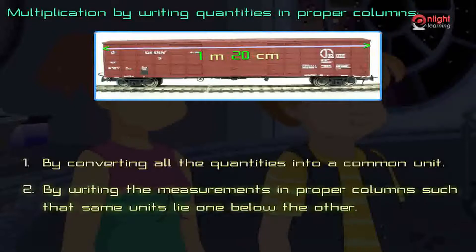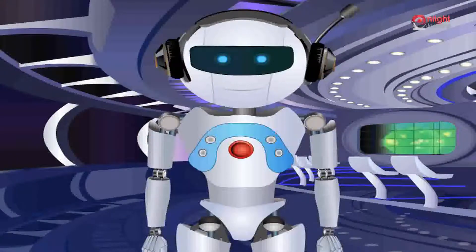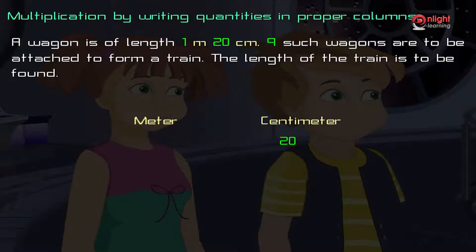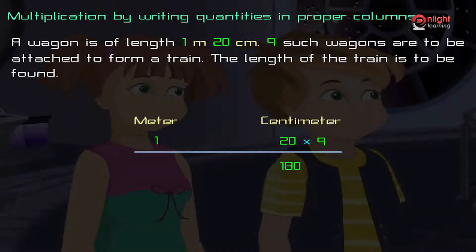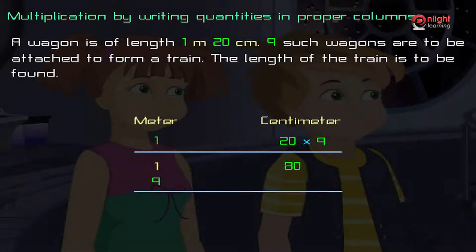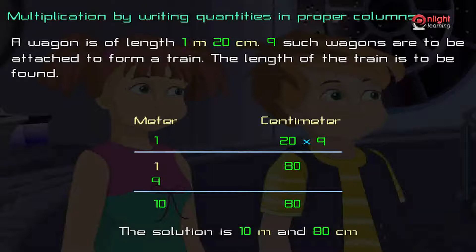Let us now employ the method of multiplication by writing quantities in proper columns. In this method, all the quantities are expressed in columns such that the quantities of the same unit lie one below the other. The columns are arranged in decreasing order of magnitude, so meter comes before centimeter. Hence, 20 centimeters lies in the centimeter column. First, 9 is multiplied to the centimeter column: 9 × 20 = 180, which equals 1 meter and 80 centimeters. Carrying 1 to the left and keeping 80 in the centimeters section, we multiply 9 × (1 + 1) = 10. Hence, the solution is 10 meters and 80 centimeters.